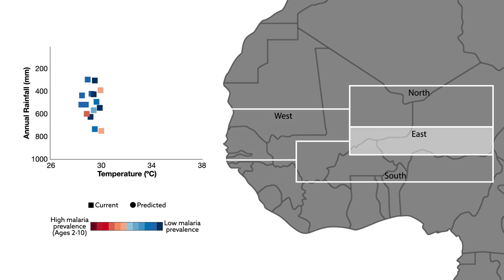Finally, eastern areas are expected to have more rainfall, augmenting breeding. At the same time, higher temperatures will likely kill more mosquitoes. Here, the two effects cancel out, suggesting that the current rate of malaria will remain the same, despite changes to the environment.